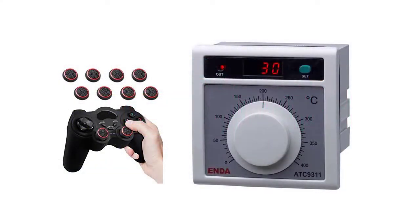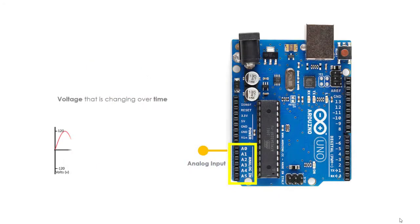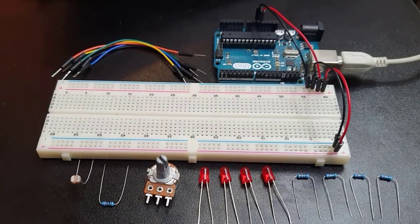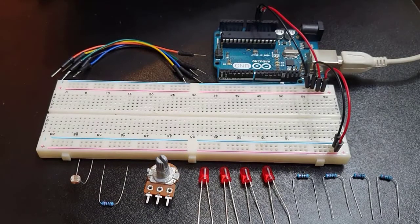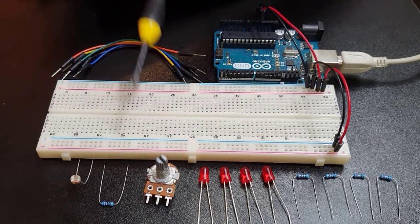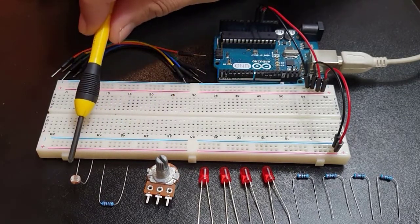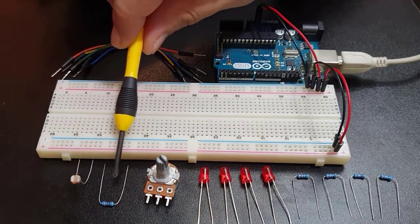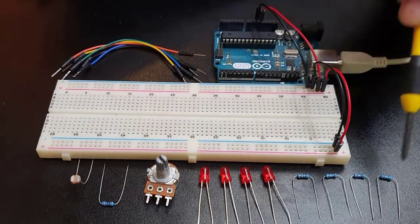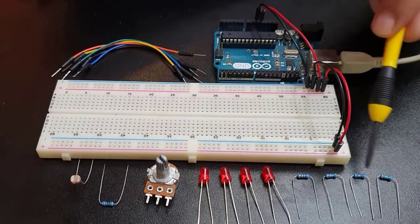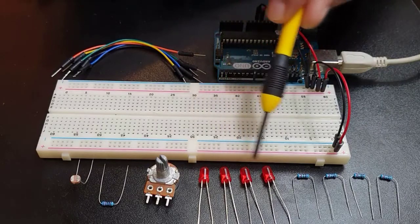In Arduino, when we talk of analog signals, just think of them as voltage that is changing over time. To demonstrate how to work with analog signals in Arduino, you will be needing the following materials: a 10-kilohm potentiometer, a light-dependent resistor also known as photoresistor, a 10-kilohm resistor, 4 pieces of 220-ohm resistors, and 4 LEDs.